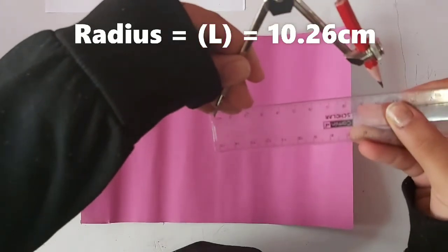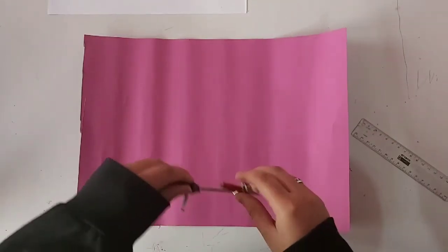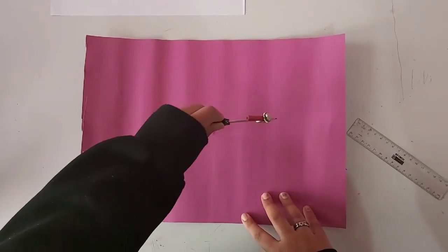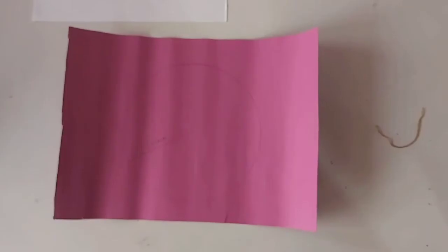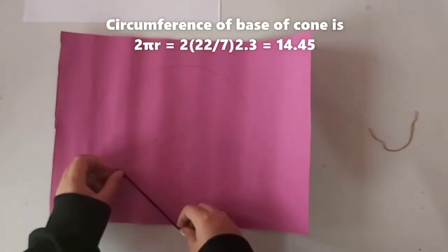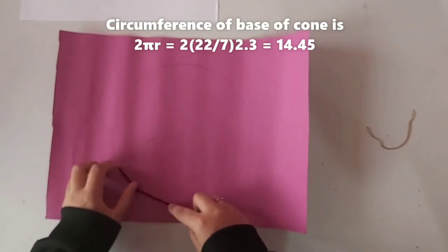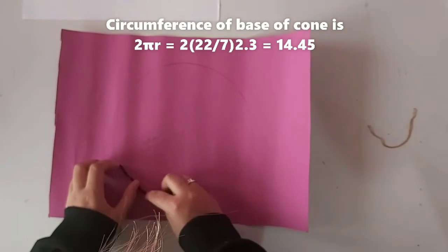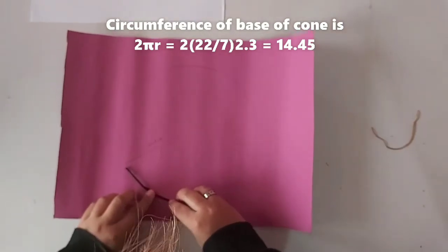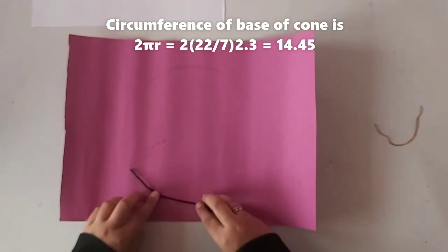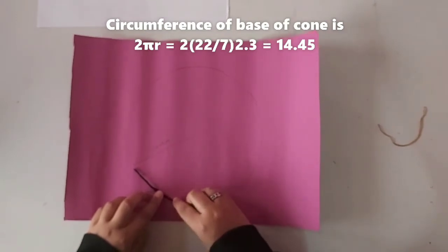Draw a circle with the radius as the slant height of the cone. Draw a line from the center of the circle to the edge and then find the circumference of the base of the cone, which is 14.45 cm. We use a string to measure out that length along the circumference.